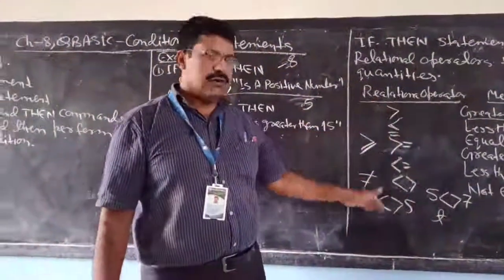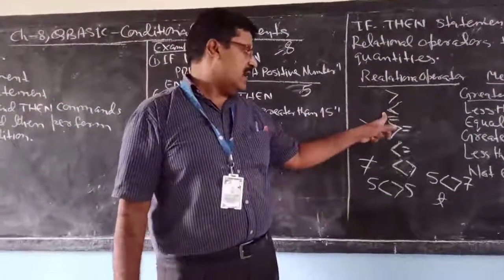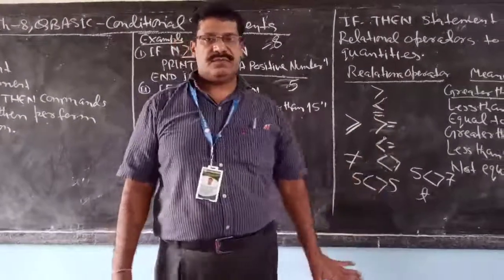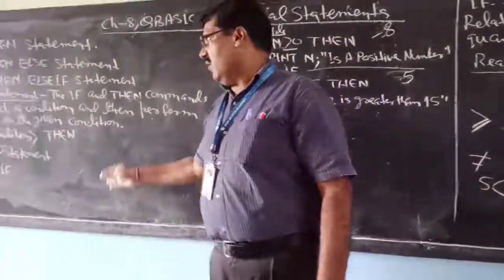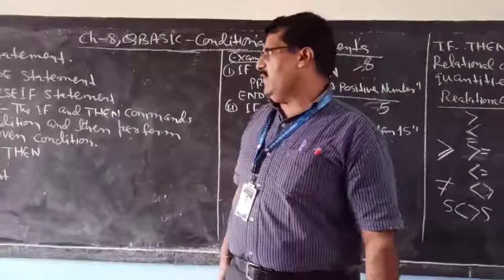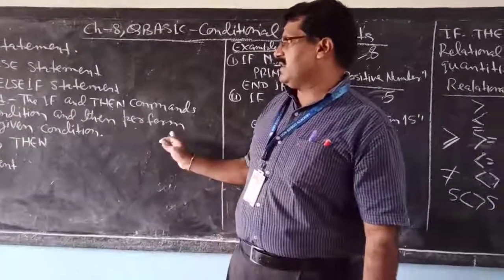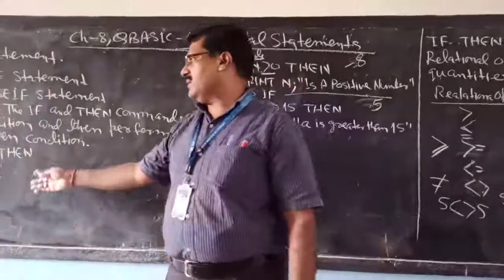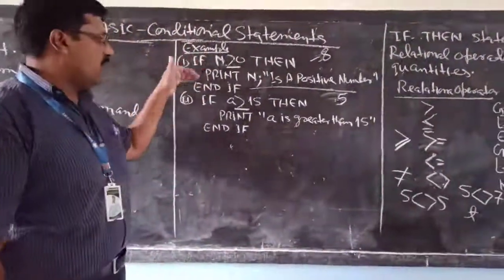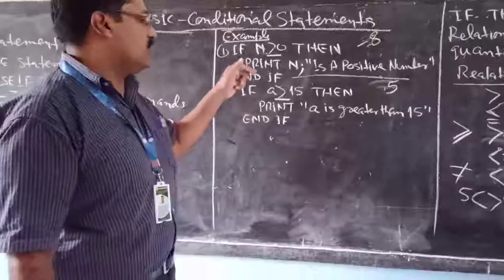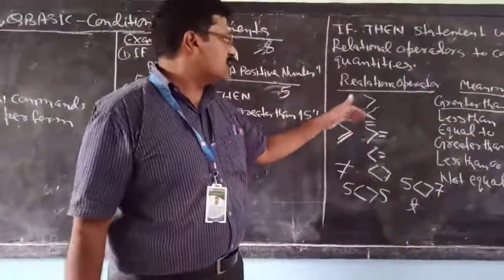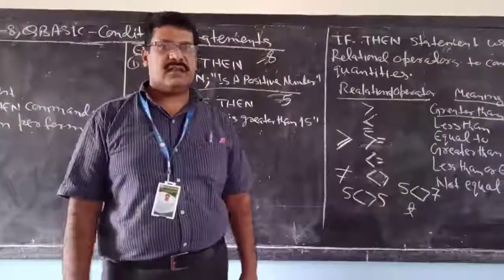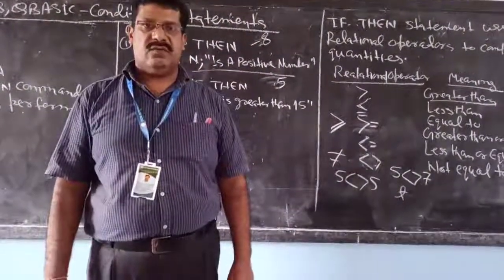So there are six relational operators: greater than, less than, equal to, greater than or equal to, less than or equal to, and not equal to. In today's class you have learned what the IF-THEN statement is — it checks the condition and performs the task based on the given condition. You have also learned the syntax, how to write it in a program, and which relational operators are used to check the condition. Thank you.